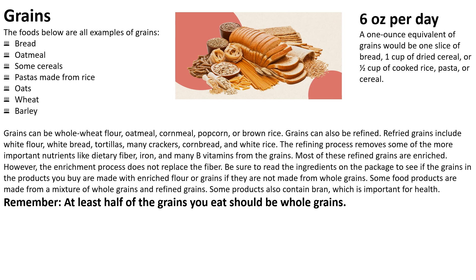Refined grains include white flour, white bread, tortillas, many crackers, cornbreads, and white rice. The refining process removes some of the more important nutrients like dietary fiber, iron, and many B vitamins from the grains. Most of these refined grains are enriched; however, the enrichment process does not replace the fiber.